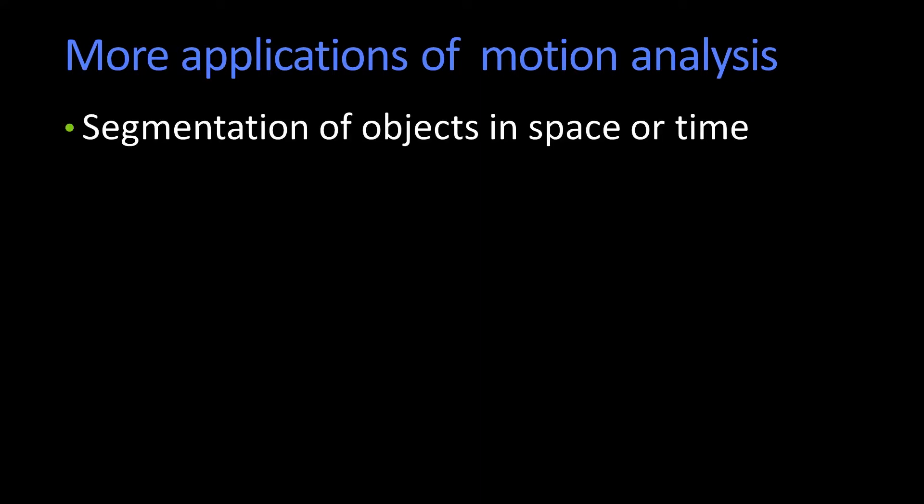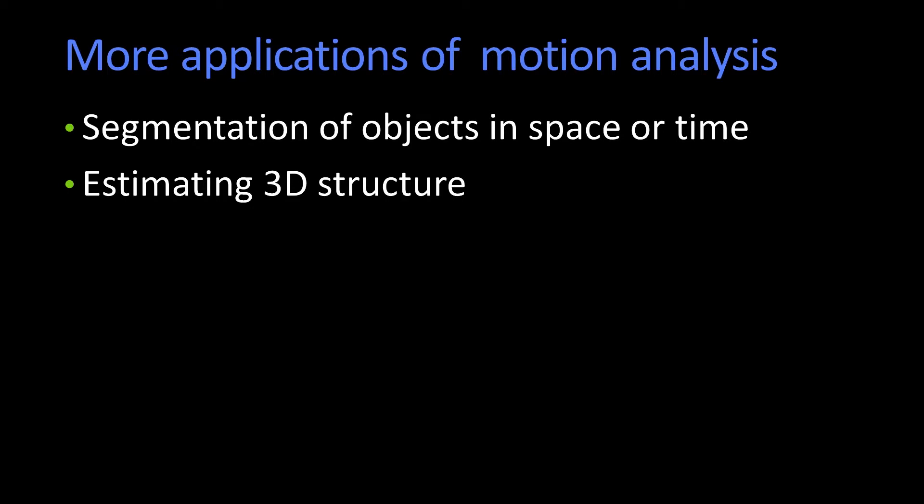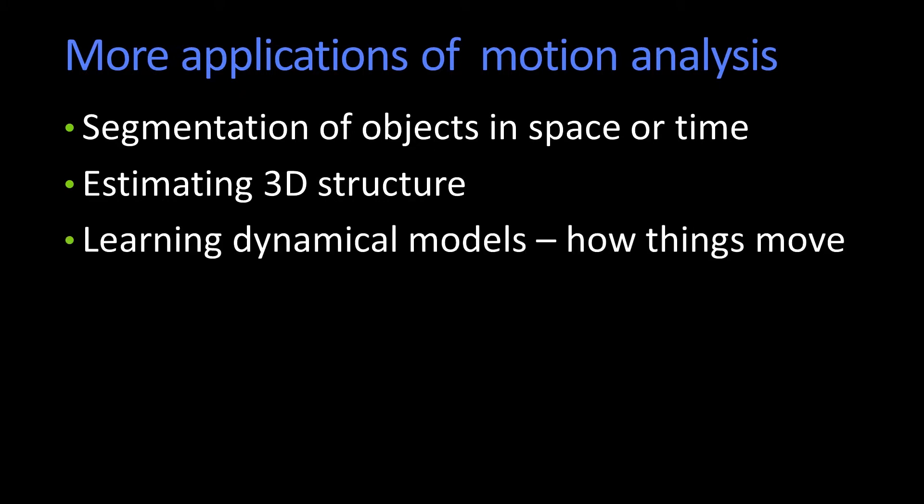So there are other applications of motion analysis: segmenting objects in space-time. Sometimes you can get the three-dimensional structure. If you know how the points are moving, you know which point is which — just like when you saw the person. You might want to learn the dynamics of how something moves. Maybe you're doing physiology and you're watching people moving and you want to understand something about their gait and the dynamics of their gait.